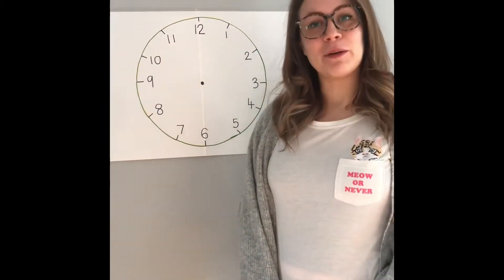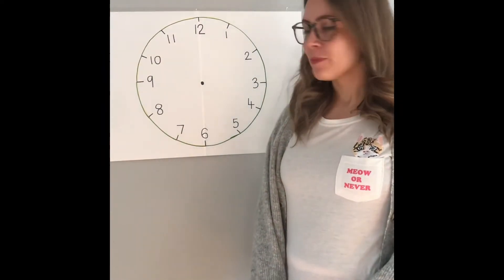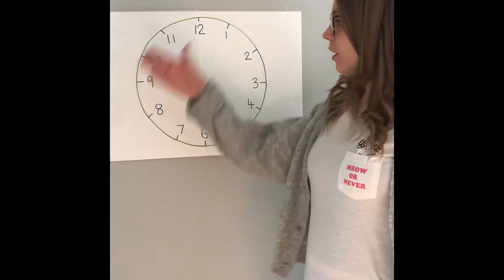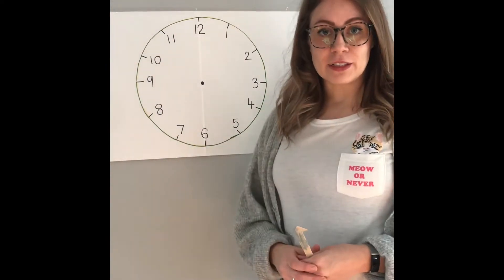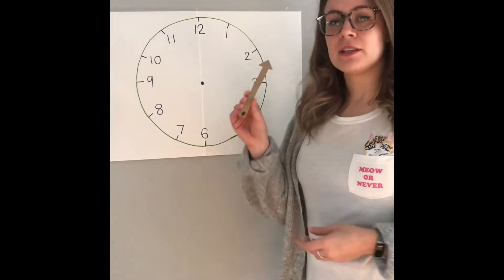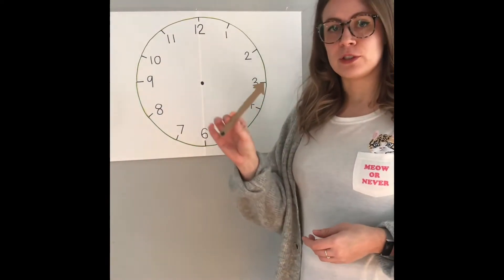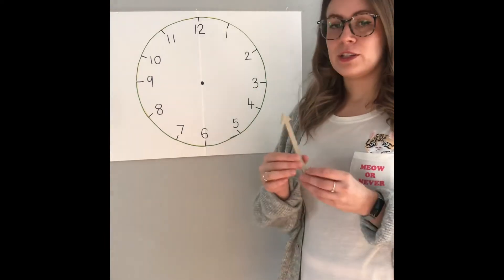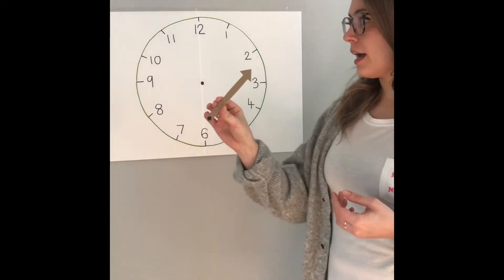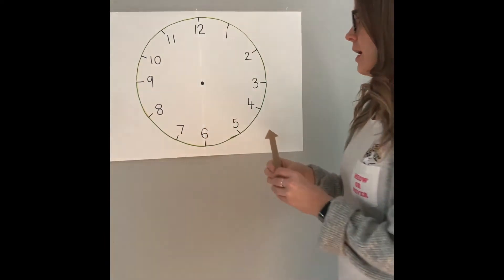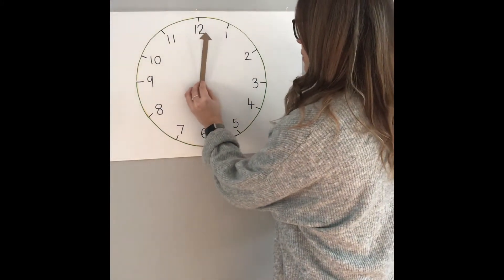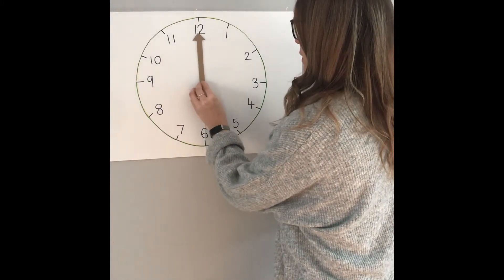Hi Y3, today we're going to have a go at learning to tell the time on an analogue clock to the nearest five minutes. I'm going to start off with just one hand, which is the minute hand. It's the longer hand — the minute hand. So we're just going to focus on that for now.